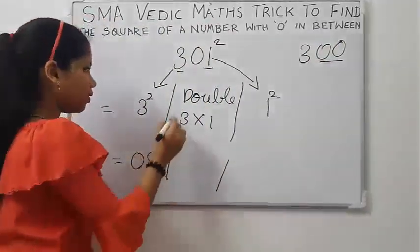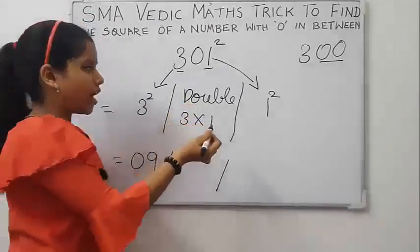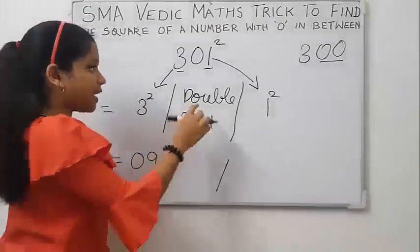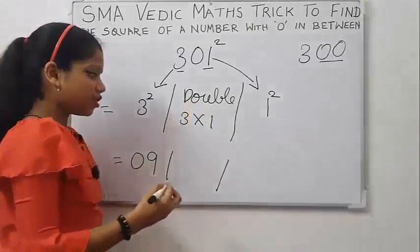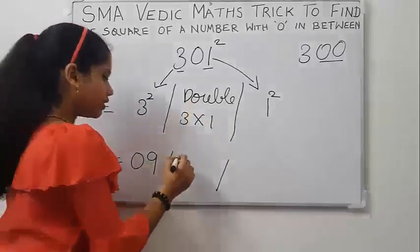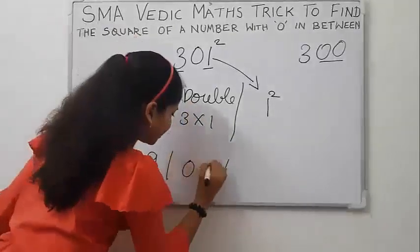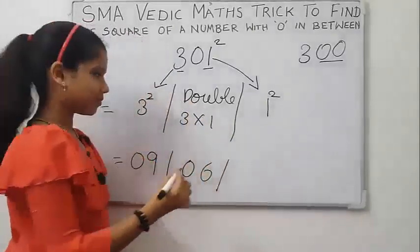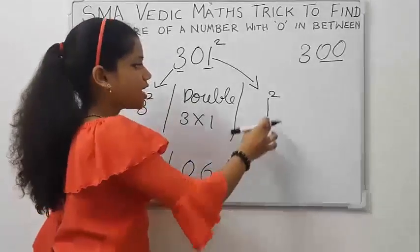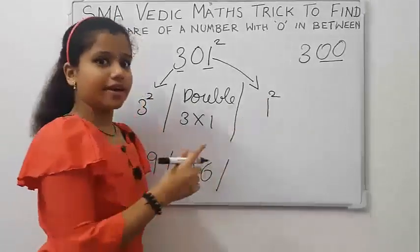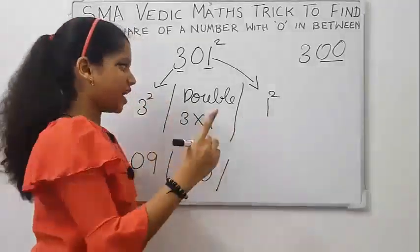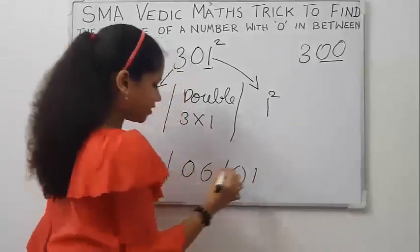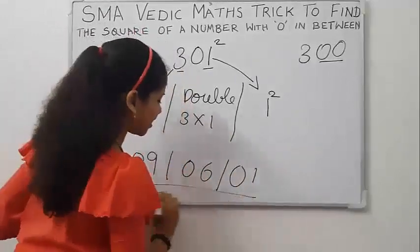So, 3 into 1 is 3, and double of 3 is 6. We will write 06 in the middle part. In the right part, 1 square is 1, and we write 01. This is our answer.